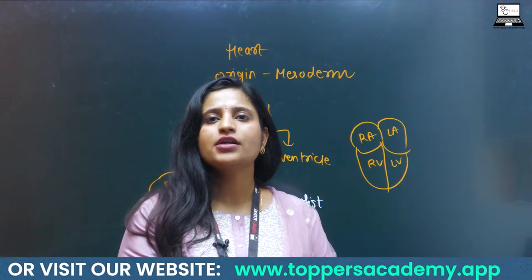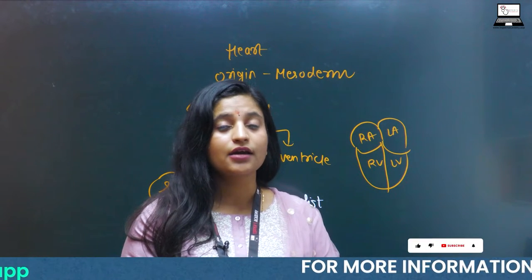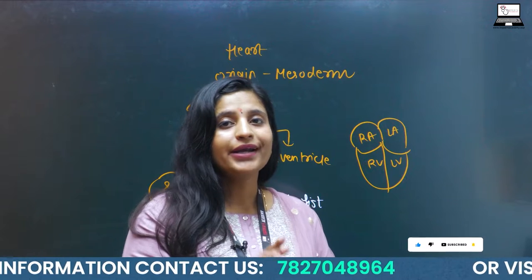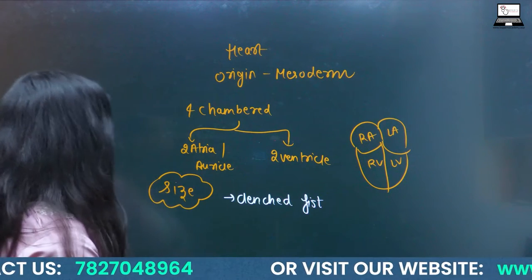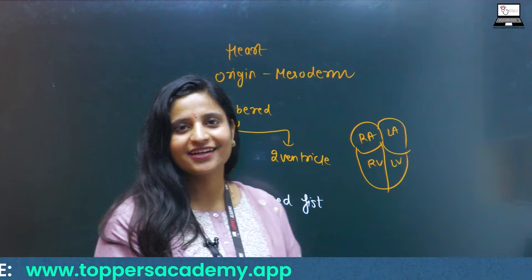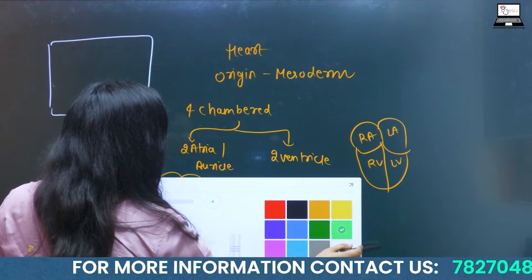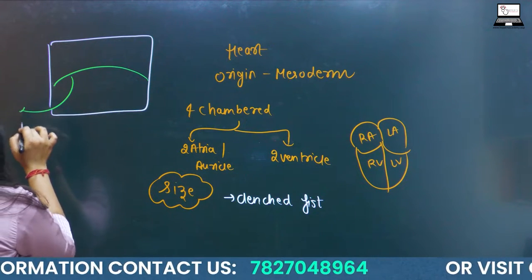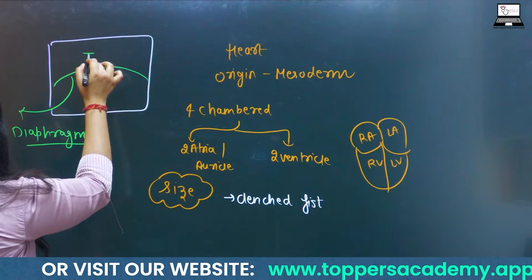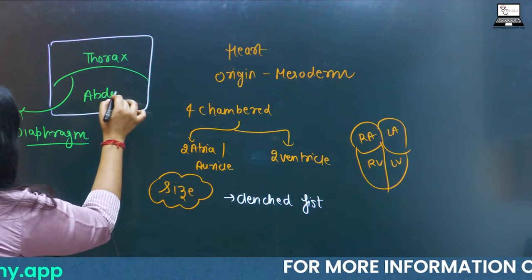Those who do not belong to a science background think that the heart is present on the left side, but that is not right. Some part of the heart is present a little bit more towards the left side — that's true — but it is not exactly on the left side. Your entire body is divided into two regions by the diaphragm. The upper portion above the diaphragm is known as the thorax, and the below part is known as the abdomen.